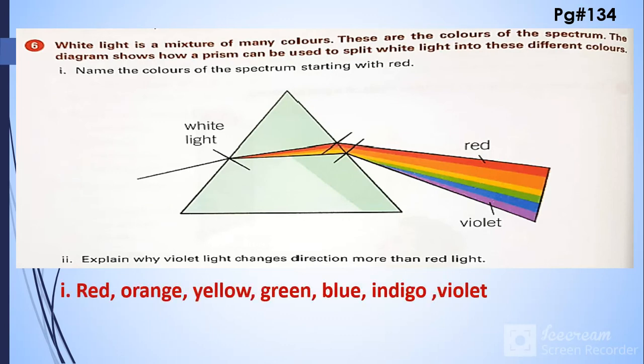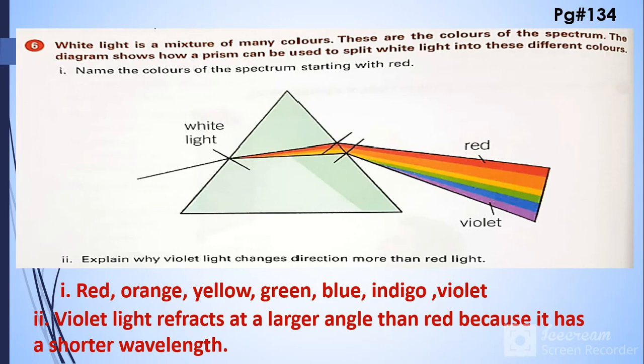Yellow, green, blue, indigo, and violet. Explain why the violet light changes direction more than red light. So the answer is violet light refracts at a larger angle than red because it has a shorter wavelength. So this is all about this exercise. Thank you so very much.